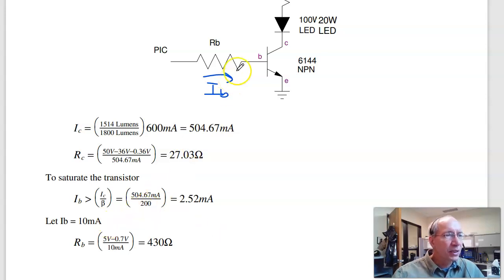At 10 milliamps, the voltage drop across this resistor - here's the diode, that means 0.7 volts. Here's your PIC, 5 volts. 4.3 volts at 10 milliamps is 430 ohms.